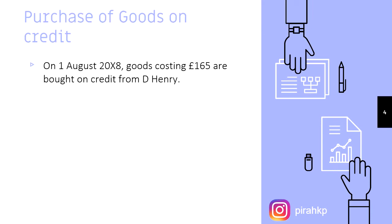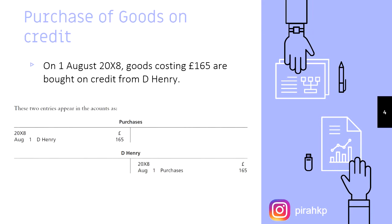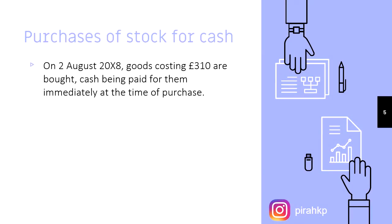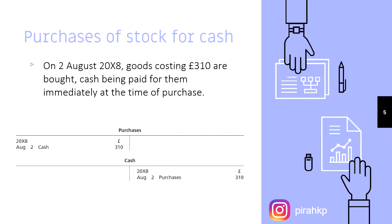Easy. Now I'll show you the ledger posting — it's simple. We've done this, so let's move to the next transaction: purchase of stock for cash. Previously we bought on credit; now we buy for cash. Same thing — just instead of a payable, you credit cash. So: Purchases debit, cash credit. Same entry, just the credit side is cash.